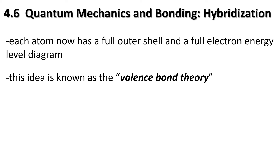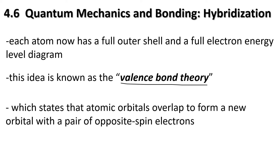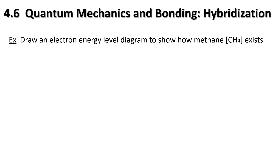This idea is known as valence bond theory. Its definition states that atomic orbitals overlap to form a new orbital with a pair of opposite-spin electrons - one spin up and one spin down. Let's continue this idea by drawing an electron energy diagram to show how methane (CH₄, one carbon and four hydrogens) actually exists.